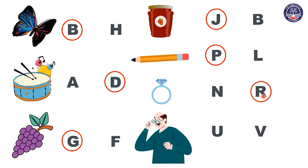Great job, everyone. We only have one picture left. What picture is this, everyone? Who is this? This is uncle. Let's say it together: U, uncle. Does uncle start with letter U or F, V? Uncle starts with letter U. So which one are we going to circle? Letter U. Yes, correct. And we are done with this exercise. Good job, everyone. I hope you have fun.